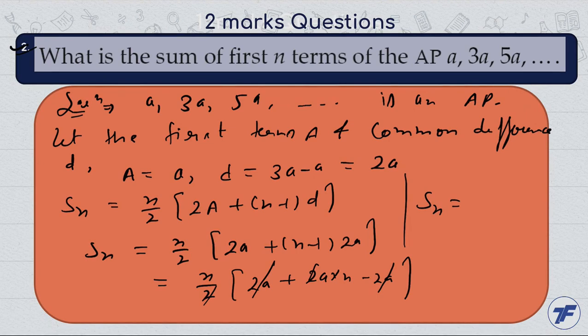We get Sn is equal to n square into a. This is the sum of first n terms of the given AP series.